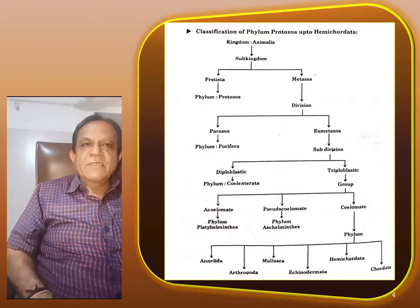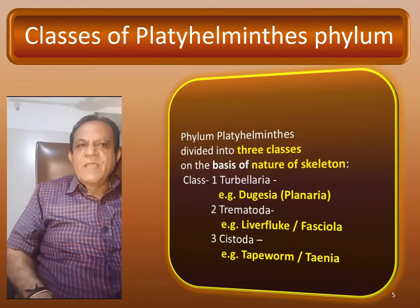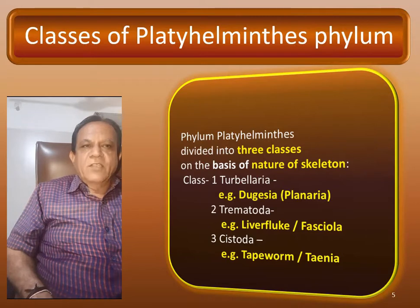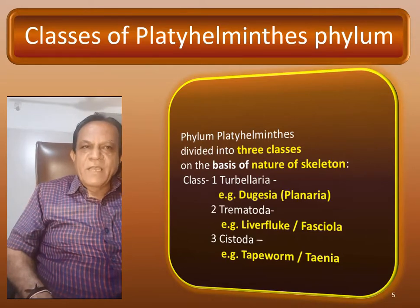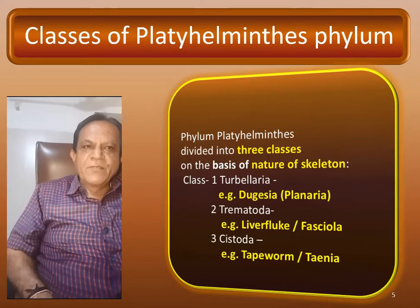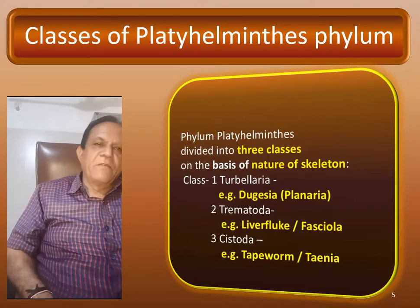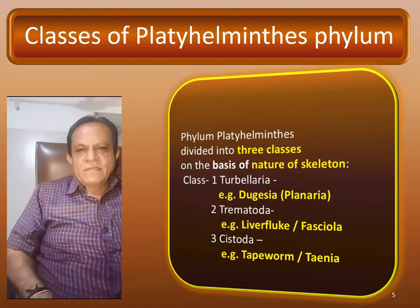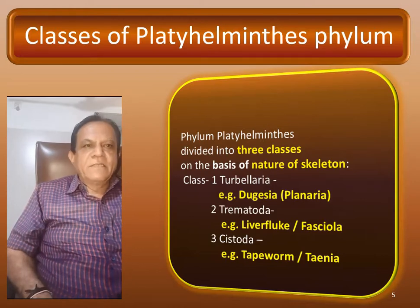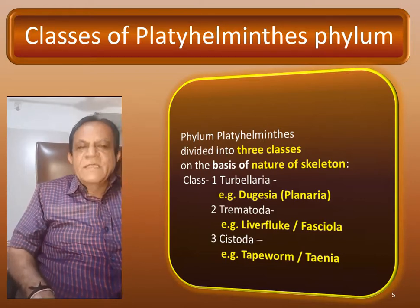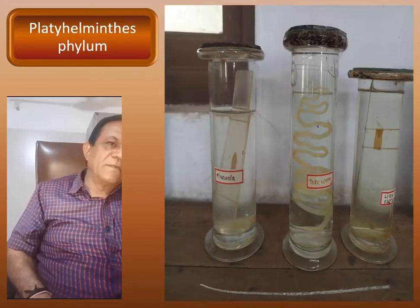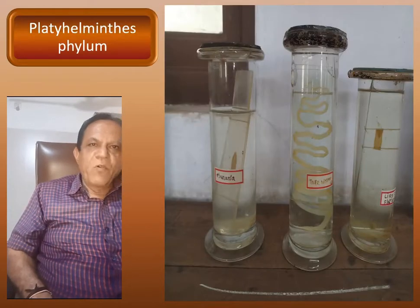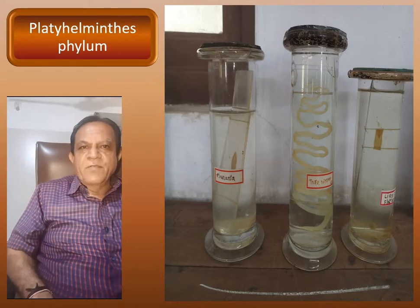The Phylum Platyhelminthes is divided into three classes on the basis of nature of skeleton: Turbellaria, Trematoda, and Cestoda. The examples respectively are Dugesia or Planaria, Liver fluke or Fasciola hepatica, and third one Tapeworm or Taenia solium. These are the specimens in our laboratory: Planaria, Tapeworm, and Liver fluke Fasciola.